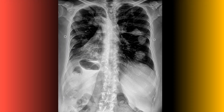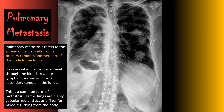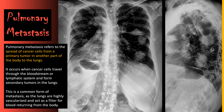In this example you should see multiple areas of increased density scattered throughout both lung fields without obvious evidence of calcification. Anytime you see that, think pulmonary metastasis first. Pulmonary metastasis refers to the spread of cancer cells from a primary tumor in another part of the body to the lungs. Due to the high vascularization of the lungs, this is what pulmonary metastasis looks like on an x-ray.